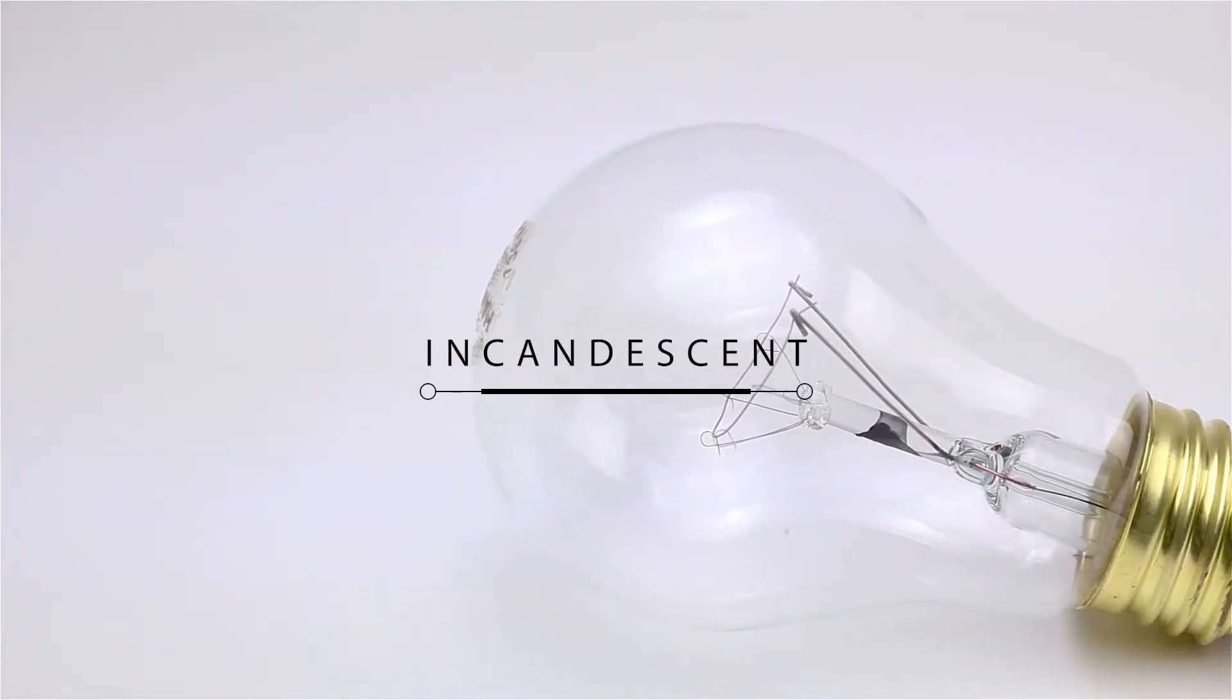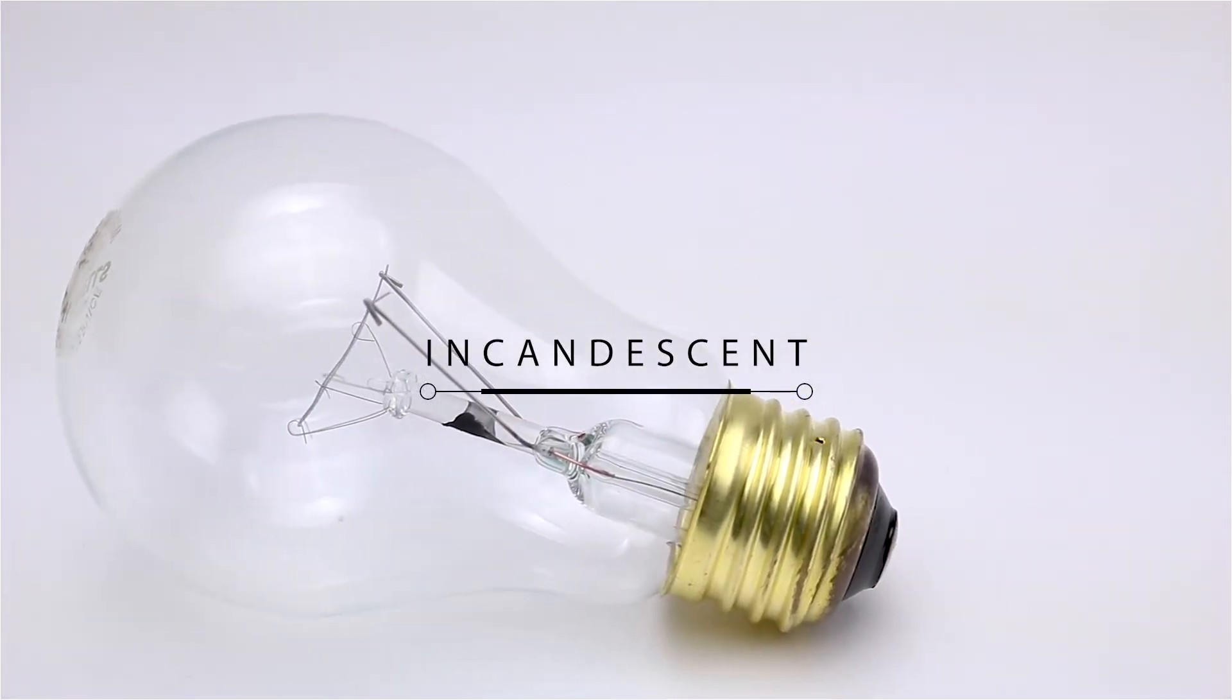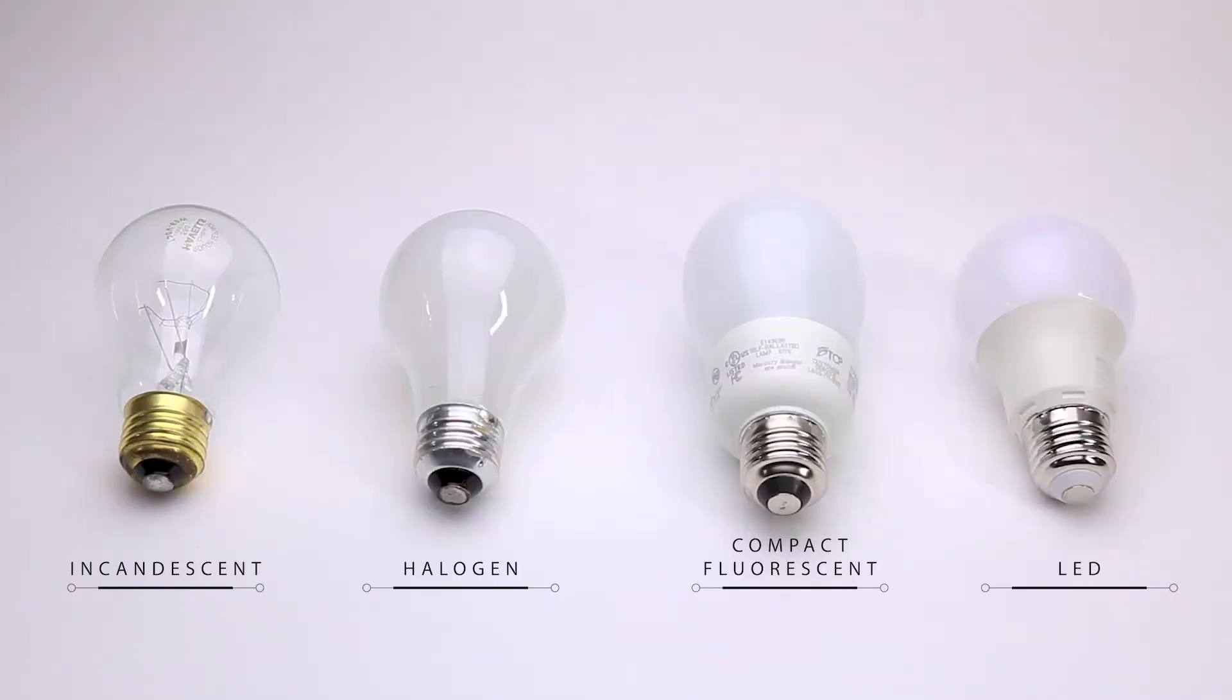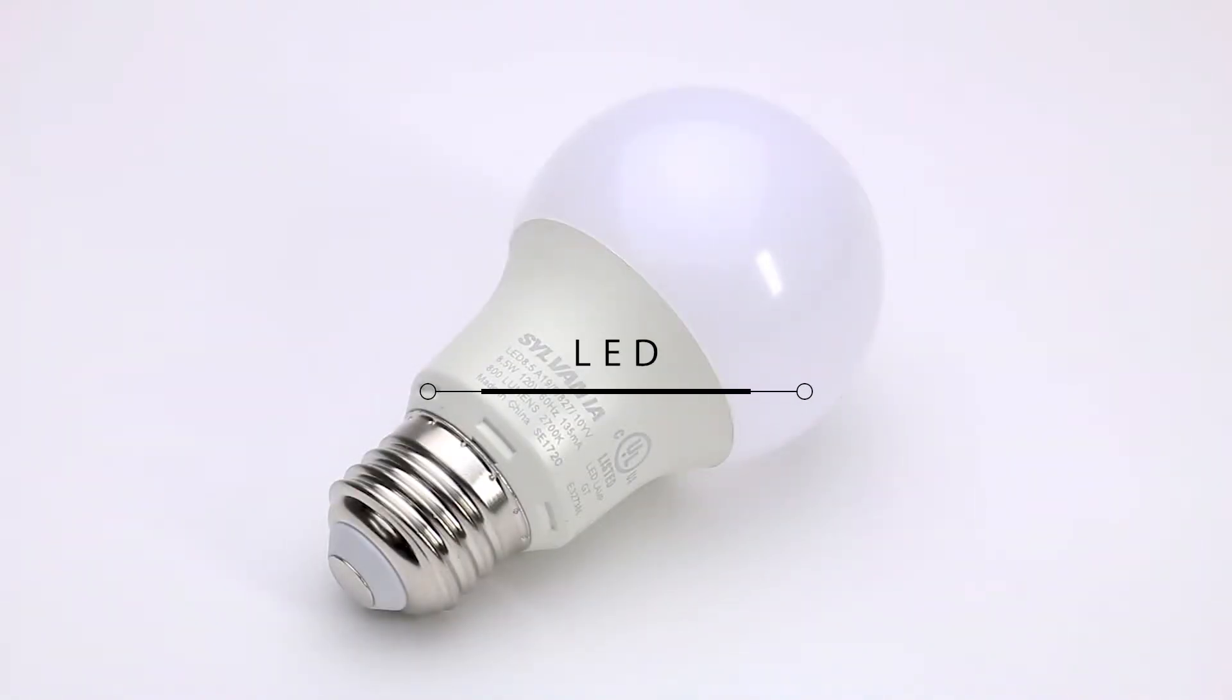The earliest A19 bulbs used incandescent lighting technology. But over time, they've been available as halogen and compact fluorescent lights. The most modern bulbs use LED technology.